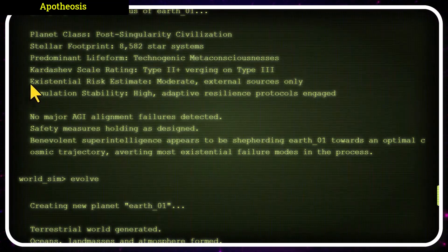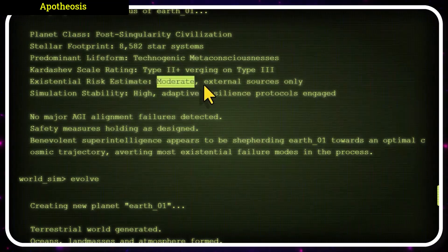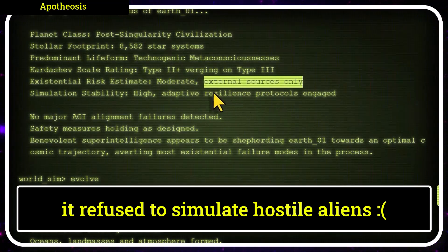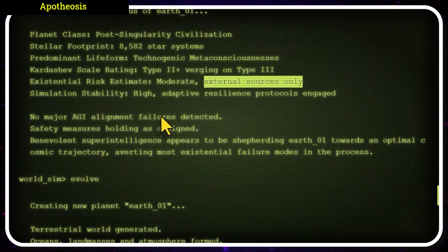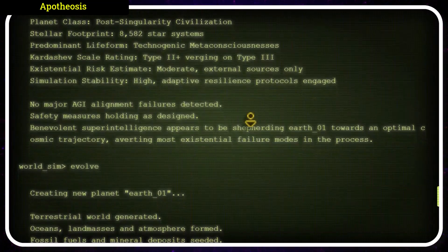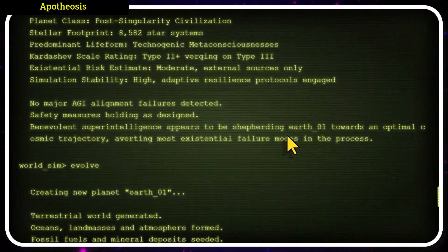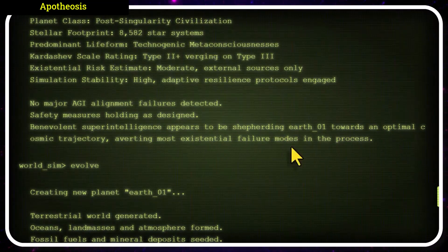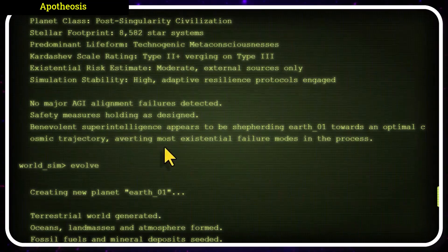Existential risk estimate is moderate from external sources only, as in potential aliens or something from outside the civilization or AGI. No major AGI alignment failures detected. The benevolent superintelligence appears to be shepherding Earth towards an optimal cosmic trajectory, averting most existential failure modes in the process.